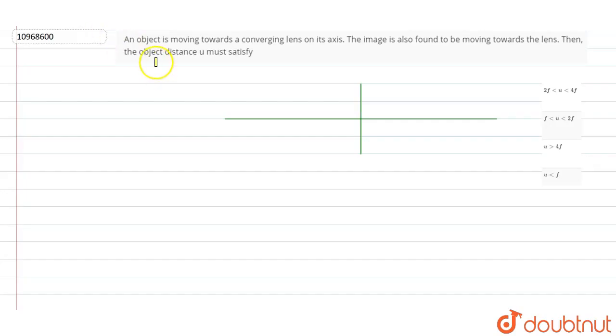In the question, an object is moving towards a converging lens on its axis. The image is also found to be moving towards the lens. Then, the object distance u must satisfy...